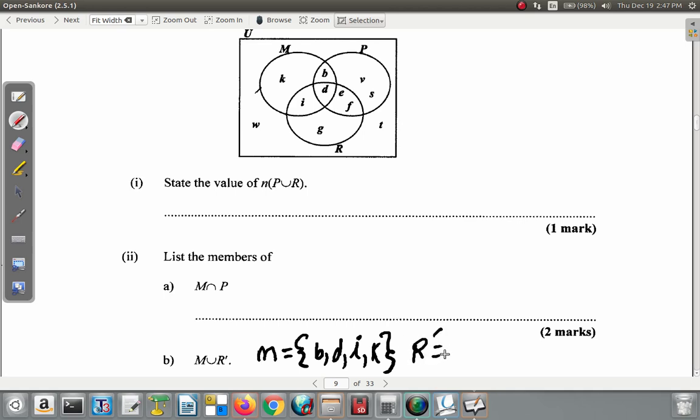R complement: as long as it's outside of R, you have k, b, v, s, t, and w. Those are outside of R.